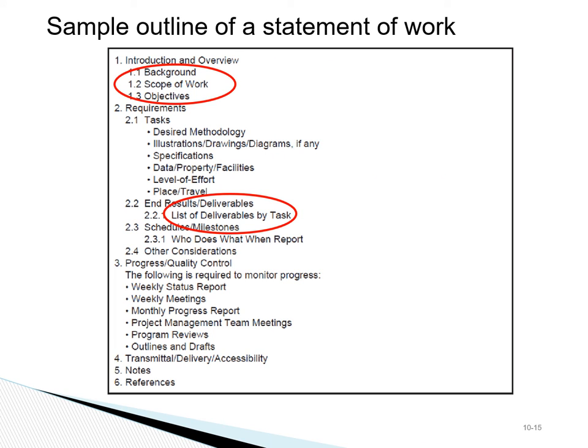An accurate and complete statement of work is critical for successful contracting. This slide shows a sample outline for a SOW — statement of work. Note that all deliverables by tasks need to be listed in the SOW to make sure it's complete. It lists all the tasks; otherwise, anything left out can be disputed by contractors as not part of the contract, and rightfully so.